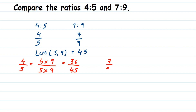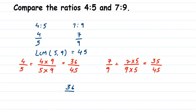Similarly for 7 by 9, we want the denominator to be 45. To convert 9 to 45, we multiply by 5, so we also multiply the numerator by 5: 7 × 5 = 35, giving us 35 by 45. We're getting the same values — 36 and 35 — as in the easy method, but with more steps. Now the denominators are the same, so we compare numerators: 36 is greater than 35.